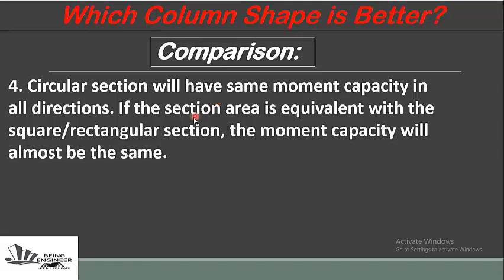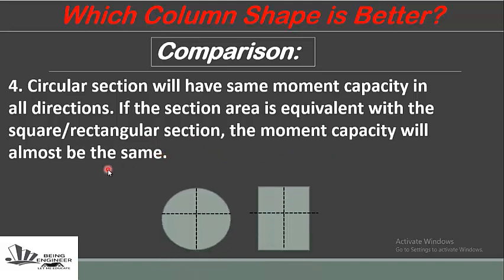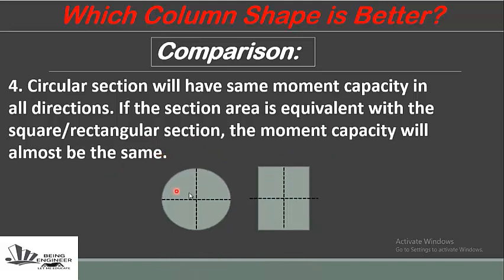The next point: circular sections will have the same moment capacity in all directions. If the section area is equivalent to that of a square or rectangular section, the moment capacity will be almost the same. If the diameter of the circular section equals the side of the rectangular section, the moment capacity of the circular section will be the same in all directions.